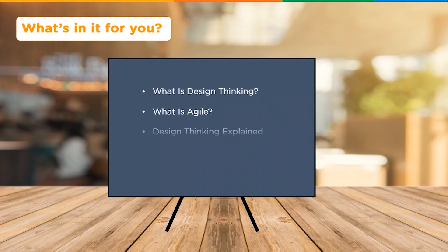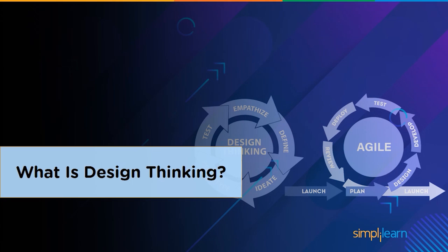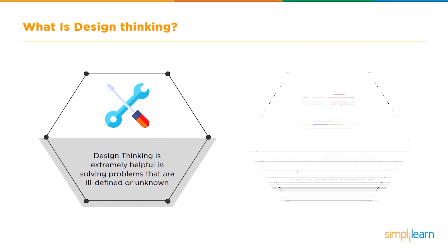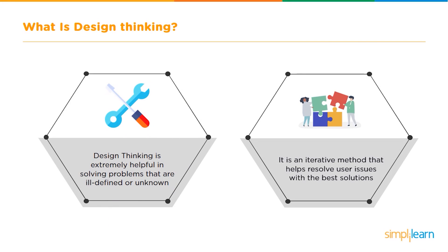Today we will be looking at what is design thinking, what is agile, design thinking explained, and how design thinking and agile work together. Design thinking is extremely helpful in solving problems that are ill-defined or unknown. It is an iterative method that helps resolve user issues or redefines problems with the best solutions.